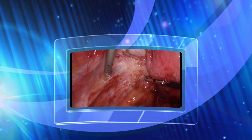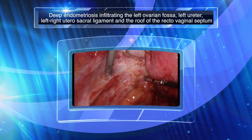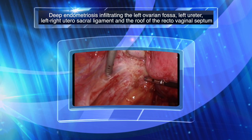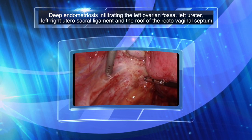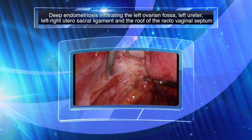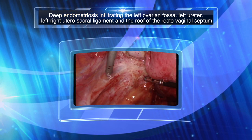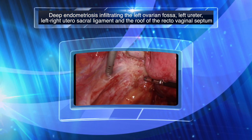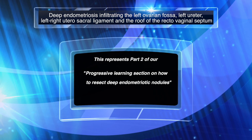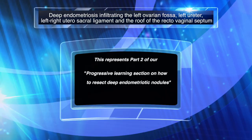Deep endometriosis infiltrating the left ovarian fossa, left ureter, left and right utero-sacral ligament, and the roof of the rectovaginal septum. This represents part 2 of our progressive learning section on how to resect deep endometriotic nodules.